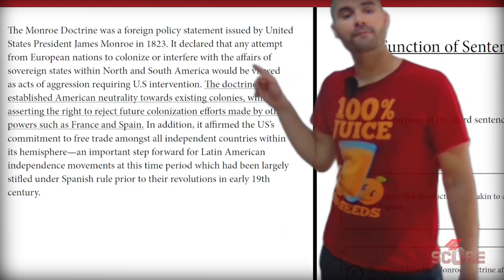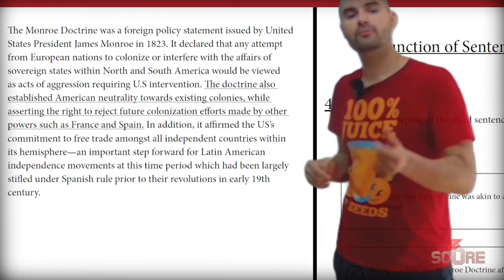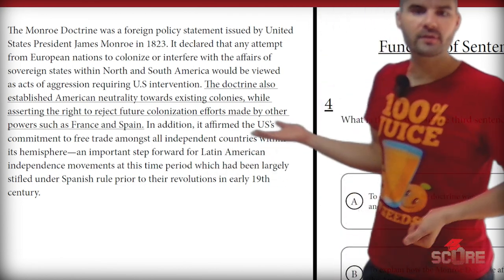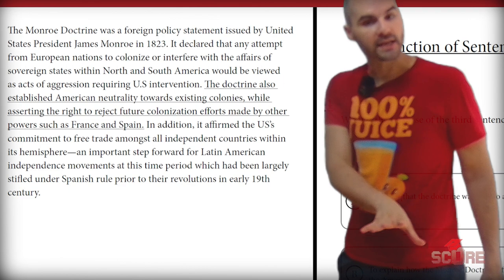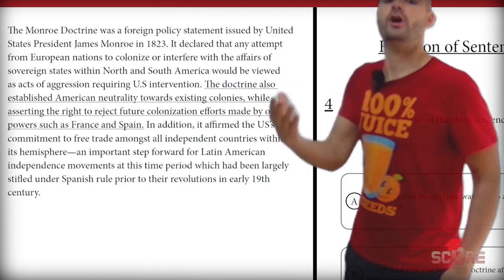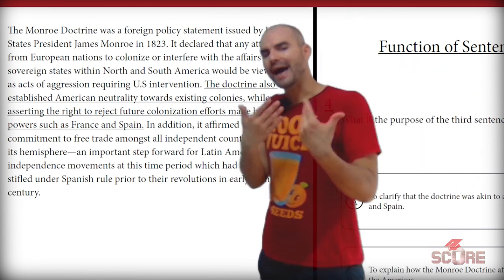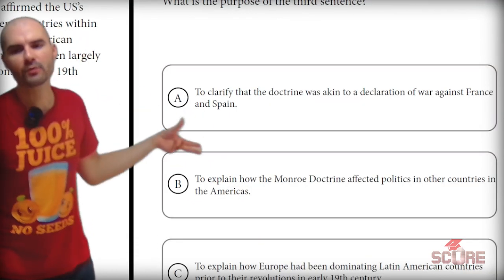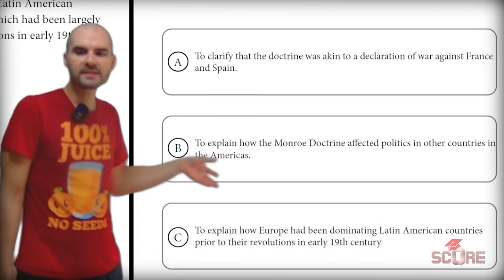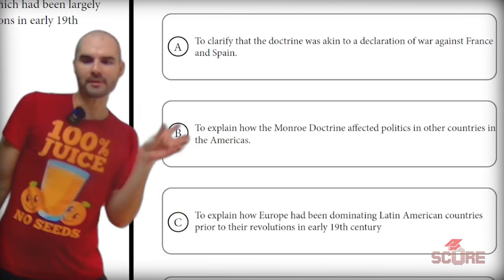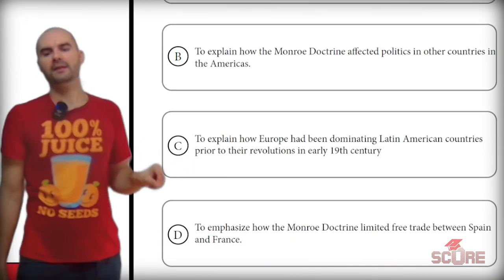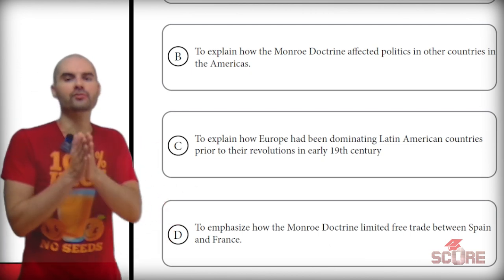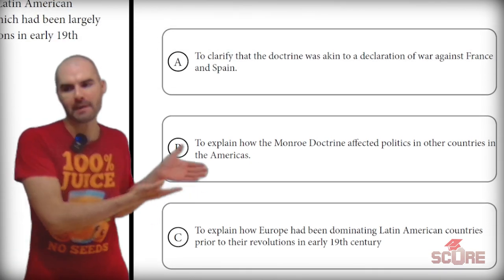Moving on to number four: 'The Monroe Doctrine was a foreign policy statement issued by United States President James Monroe in 1823.' So we're talking about a U.S. policy. The underlined third sentence says: 'The Doctrine also established American neutrality towards existing colonies, while asserting the right to reject future colonization efforts made by other powers such as France and Spain.' I can understand that it's explaining how the U.S. is going to relate to colonies and European powers. The first answer mentions a declaration of war — that's way too extreme. Answer C explains how Europe had been dominating Latin American countries — no. Answer D says it eliminated free trade — it said nothing about restricting trade, only restricting colonization. That leaves B as the correct answer.